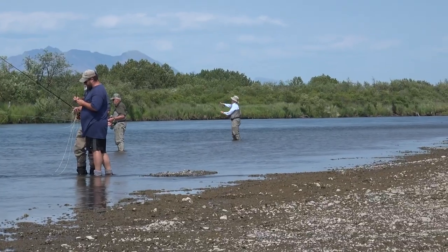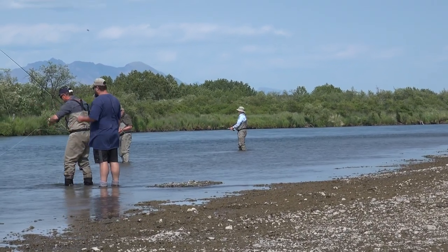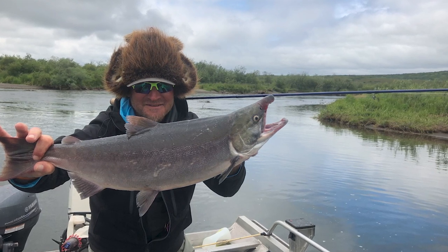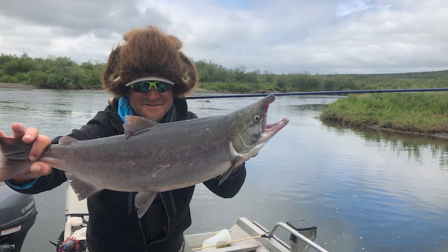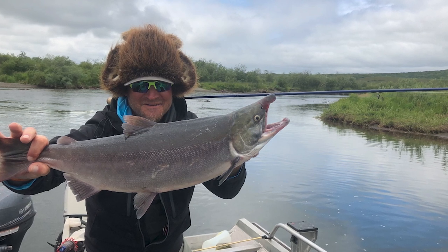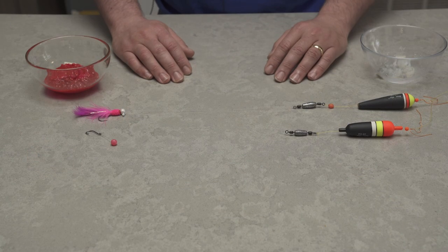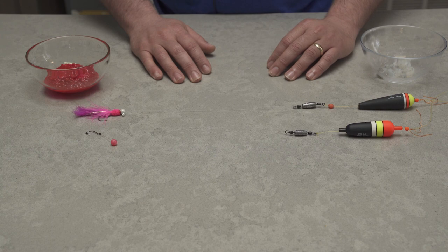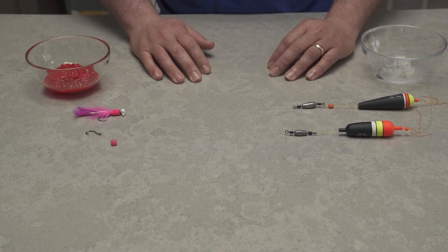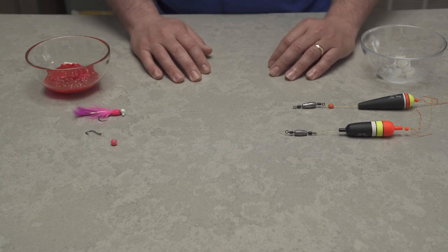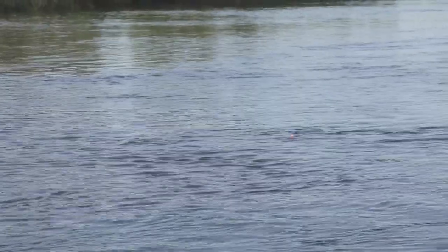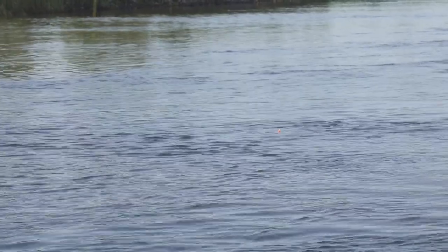What we've realized over the years is that sockeye can put on display all of the characteristics of all of the other salmon and trout species. We troll spinners downstream for kings - big spinners, number six, number eight size blades sometimes. A big presentation on heavy line with a bit of lead. And lo and behold, every now and again you catch a sockeye ripping one of these giant spinners downstream.